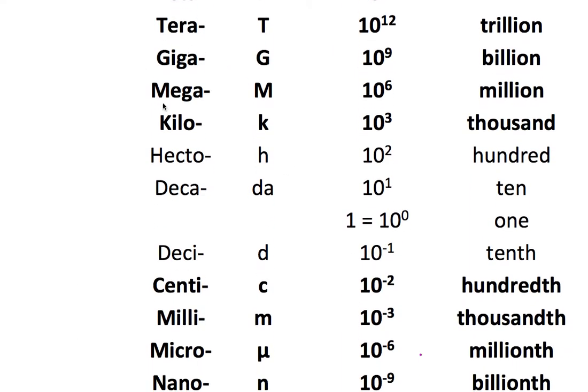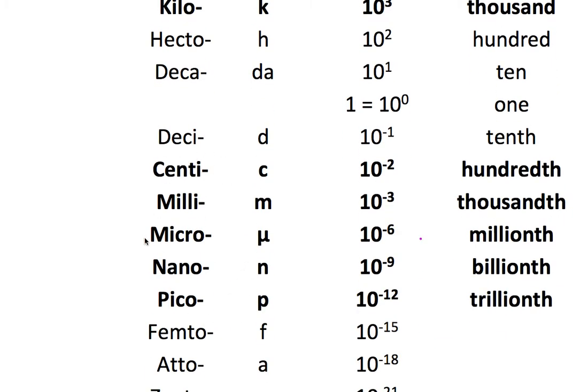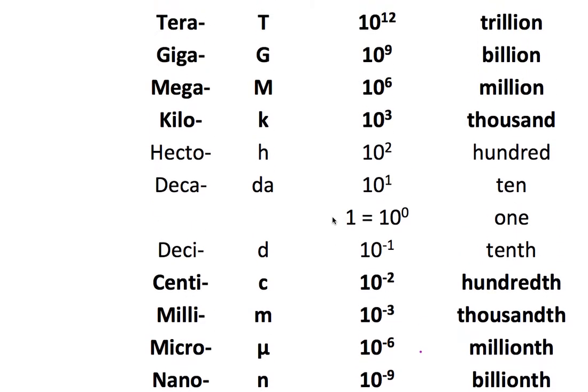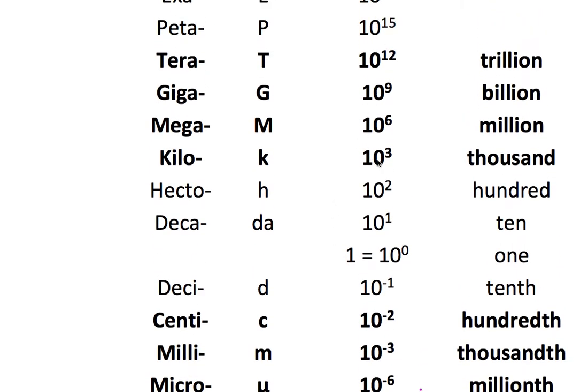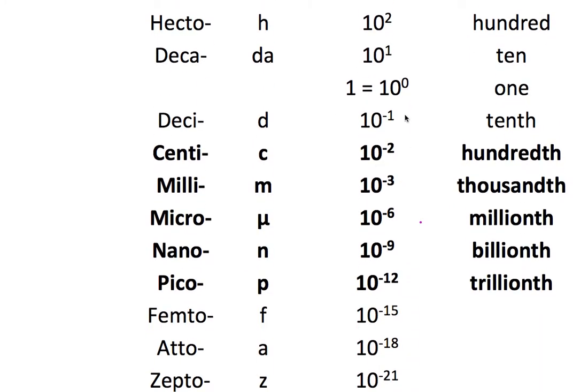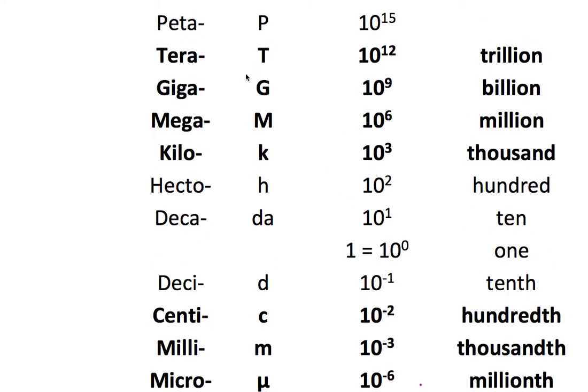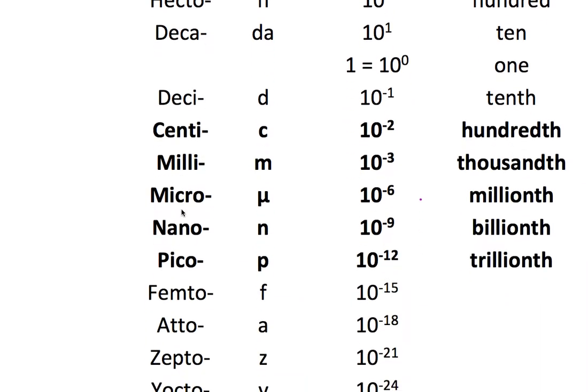First thing is, you might want to know and may have said in class, get a sense of which of these prefixes represent bigger units and which refer to smaller units. And by bigger and smaller, I mean positive exponents or positive powers of 10 and negative powers of 10. So first just get a sense of that. Like if I hear giga, I know that's a big unit. If I hear micro, I know that's a small unit.